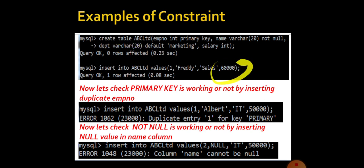Now let us check the primary key is working or not by inserting duplicate employee number. We all know the primary key will restrict duplicate entries. So for employee number, we are giving 1, that is the repeated value, Albert, IT and 50,000.